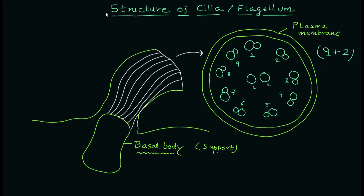Next to this you have some protein molecules. The first protein I'm representing in red color is the outer dynein protein. There is another dynein protein which is the inner dynein protein, shown in pink color. The role of dynein protein is basically in the change in conformation of this structure. So as you can see, you have two dynein proteins — outer and inner.